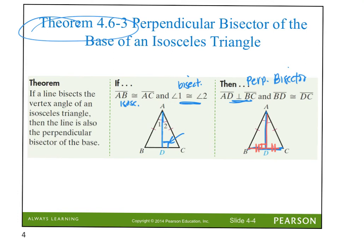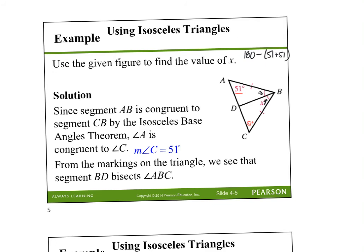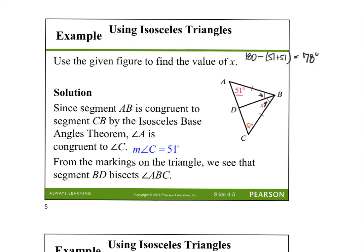Let that sink in — take a screenshot or write it down. For example, in this image we need to find X. Since these sides are equal, it's an isosceles triangle, and the base angles are equal — so this angle is also 51 degrees. We subtract the sum of 51 and 51 from 180, giving us 78 degrees for angle B. Since the segment bisects that vertex angle, X equals 39 degrees. We can double-check: 90 + 51 + 39 = 180. X equals 39 degrees.